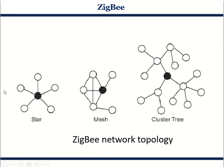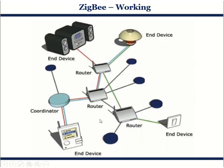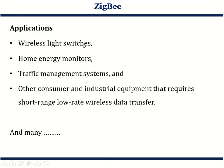For any Zigbee network to function properly it must have a coordinator. The coordinator is the most important device in the entire network — it coordinates everything and holds the addresses of all routers and details of all connected devices. The coordinator manages routing of data from one device to another. As you can see here, there are three routers and some end devices connected through a coordinator.